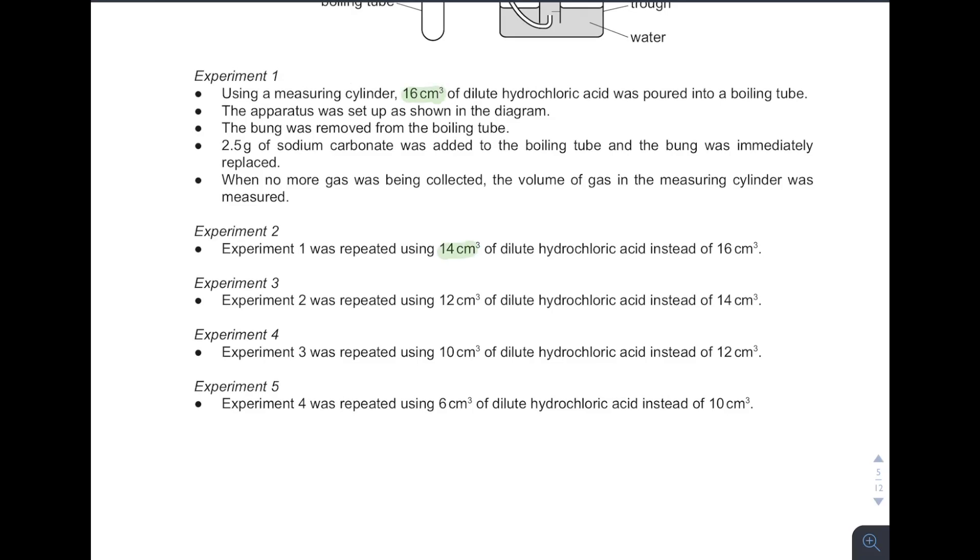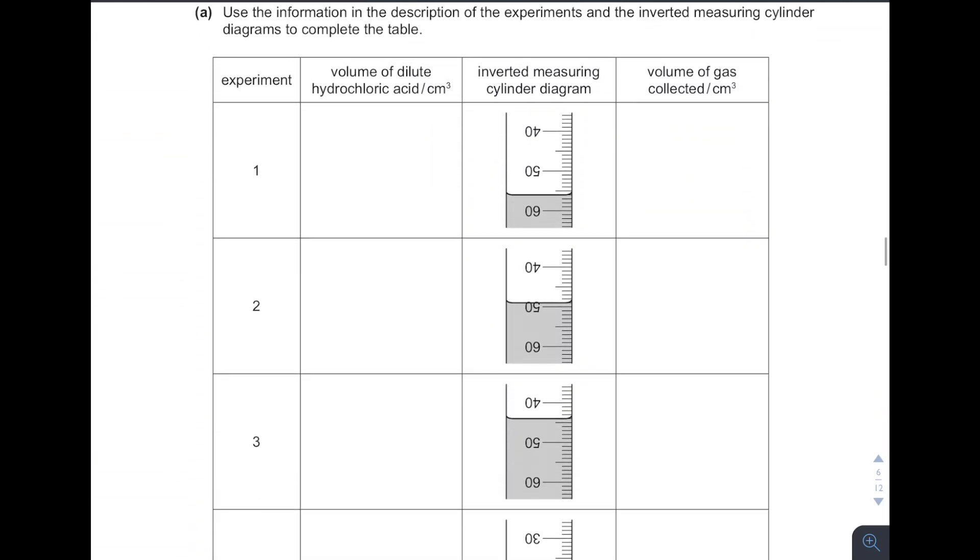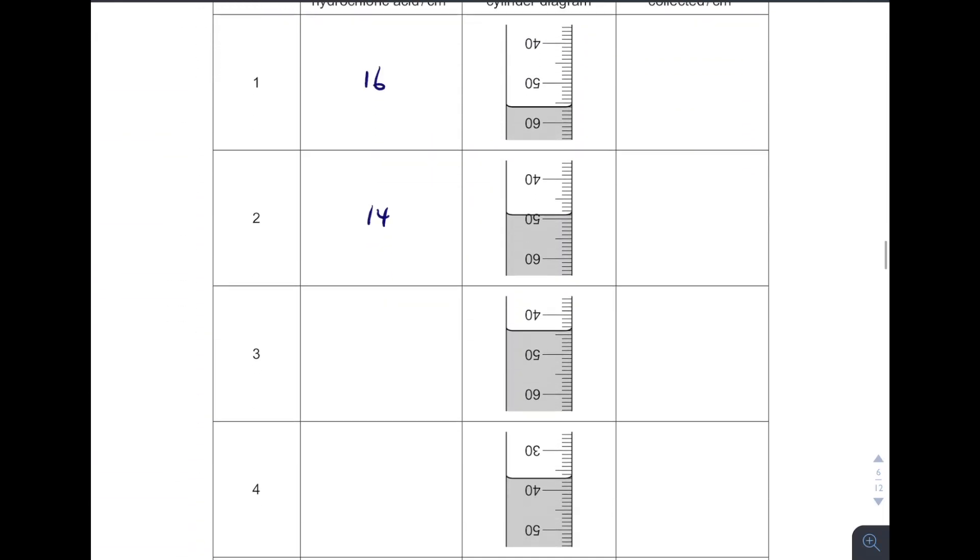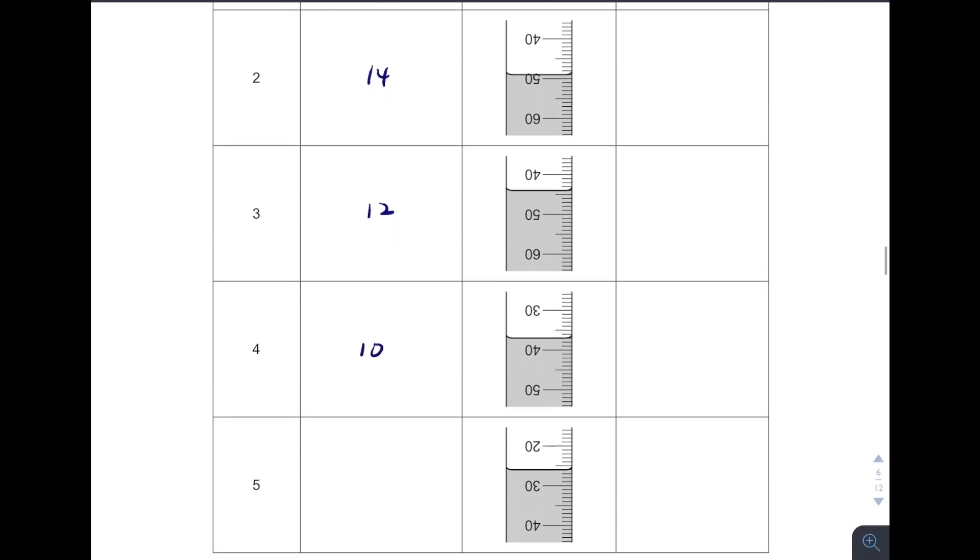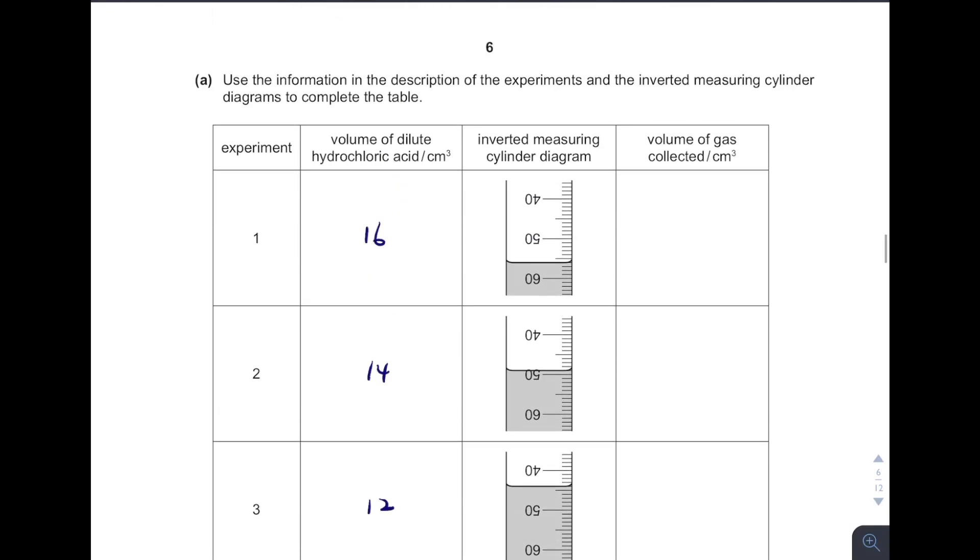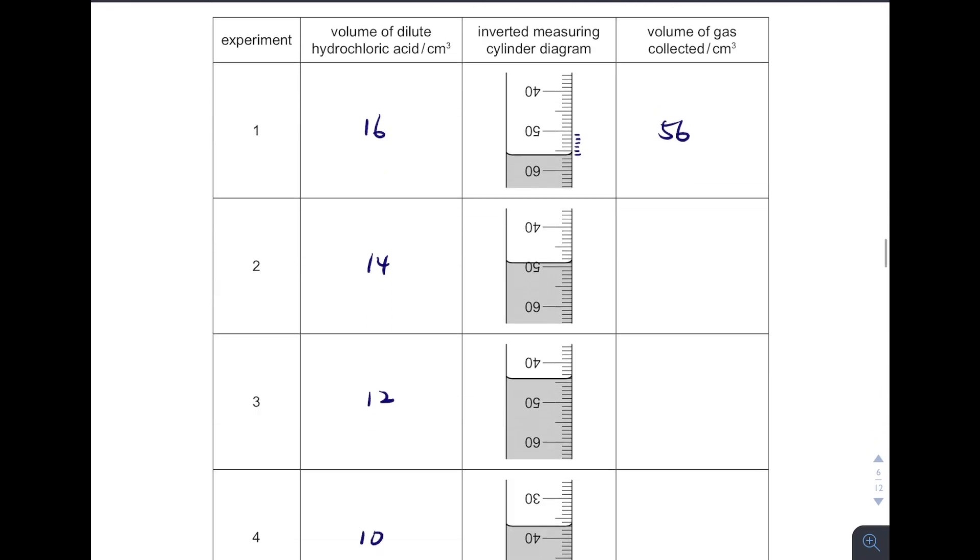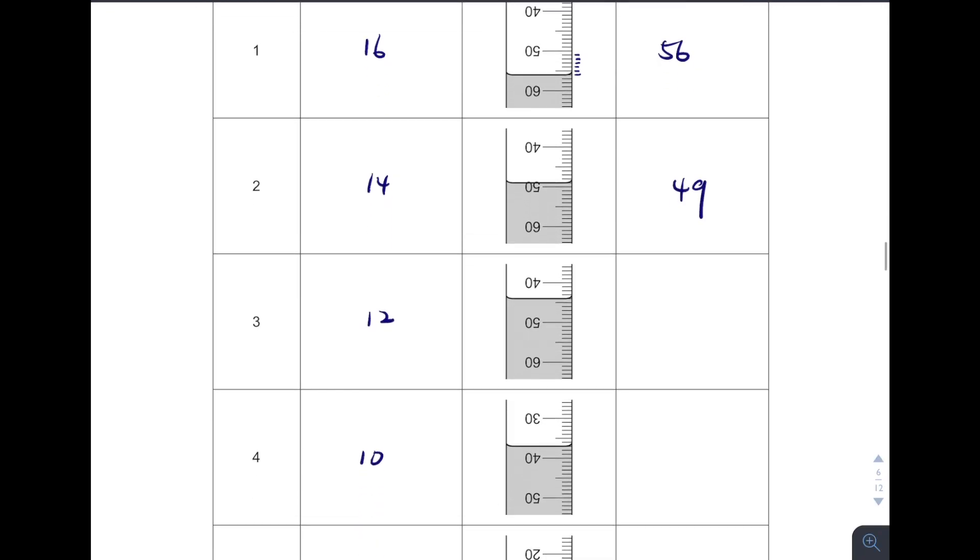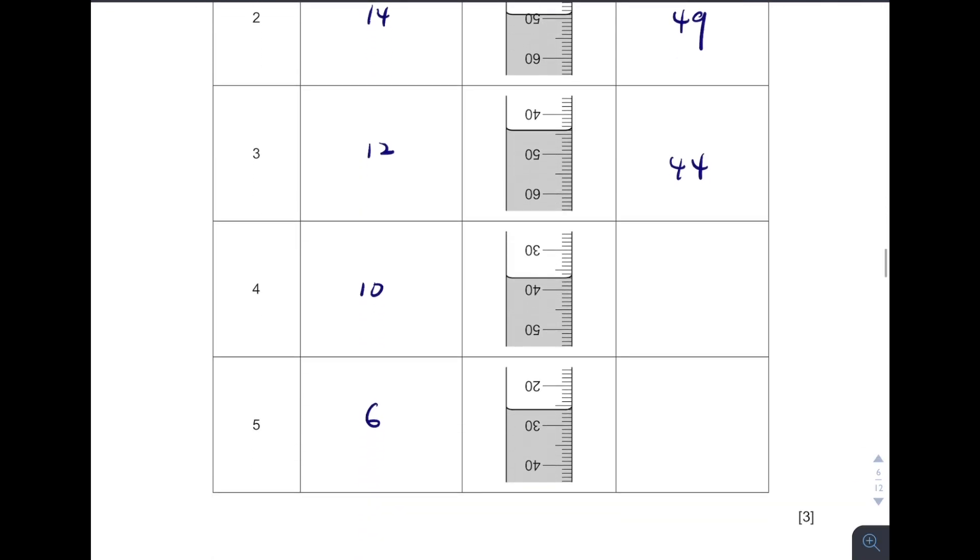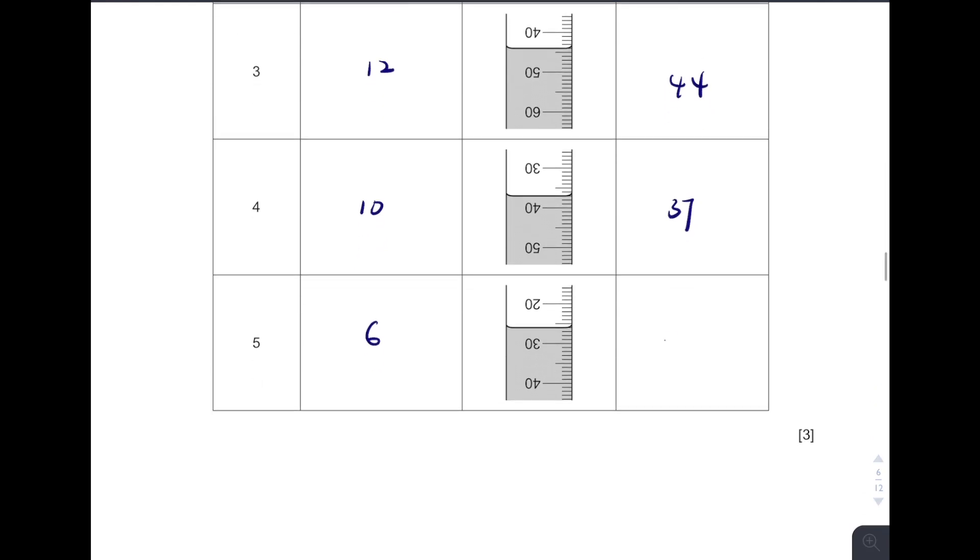So 16, 14, 12, 10, and 6 cm3. And then what is the volumes of gas produced? So you see, how do you read this? From top to bottom, you see the volume increases. So you see 50, 51, 2, 3, 4, 5, 6. So 56. Next one, 49, 44, 37, and 26.